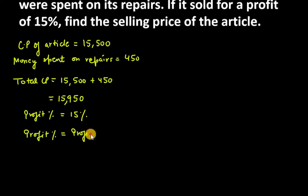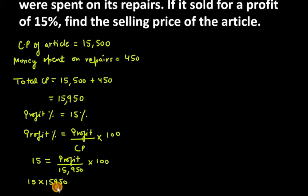So 15 equals profit over 15,950 into 100. Using cross multiplication to find profit: 15 × 15,950 ÷ 100 equals 23,925 ÷ 100.